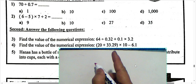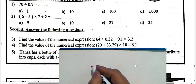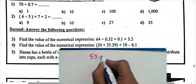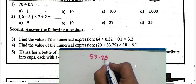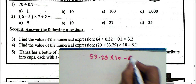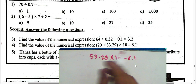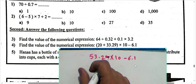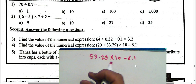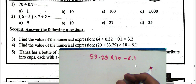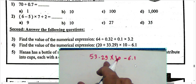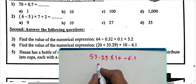Next question: find the value of the expression 20 plus 33 and 29 hundredths, product by 10, subtract 6.1. We know the order of operations: first exponents, then multiplication and division, then addition and subtraction from left to right. So 20 plus 33 equals 53, and 53 and 29 hundredths times 10 — move the decimal point one place to the right.